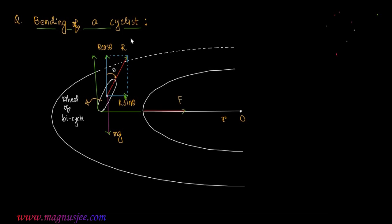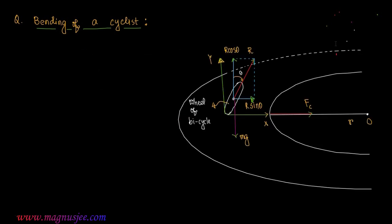This is the direction along which the centripetal force Fc is acting. Centripetal force Fc acts radially inwards. V is the linear velocity with which the bicycle will be taking a turn around the curved road.